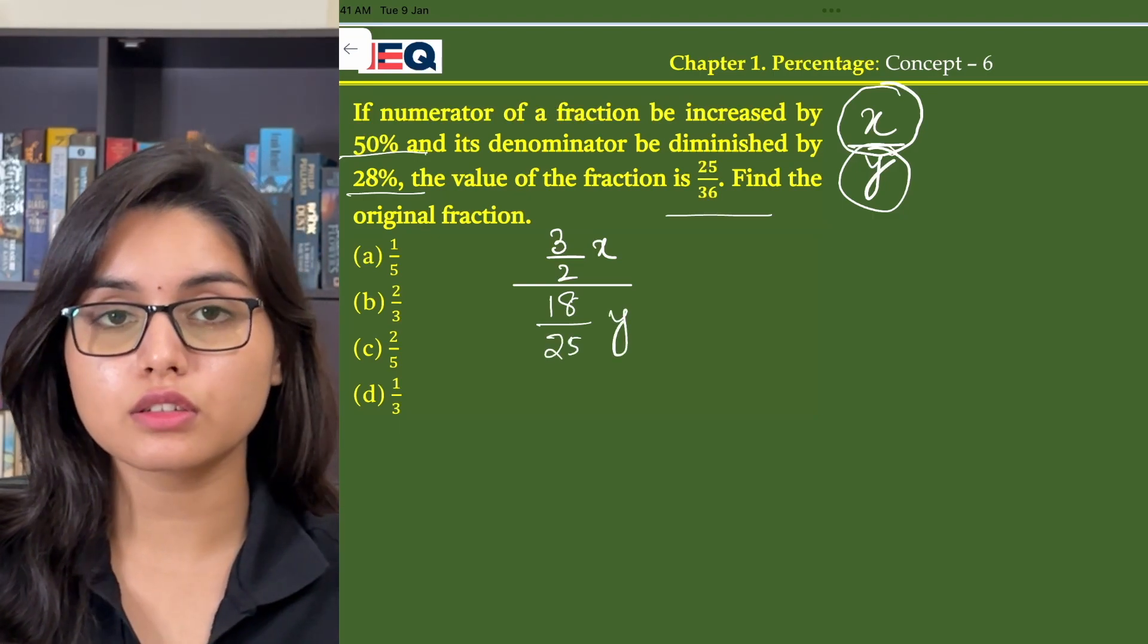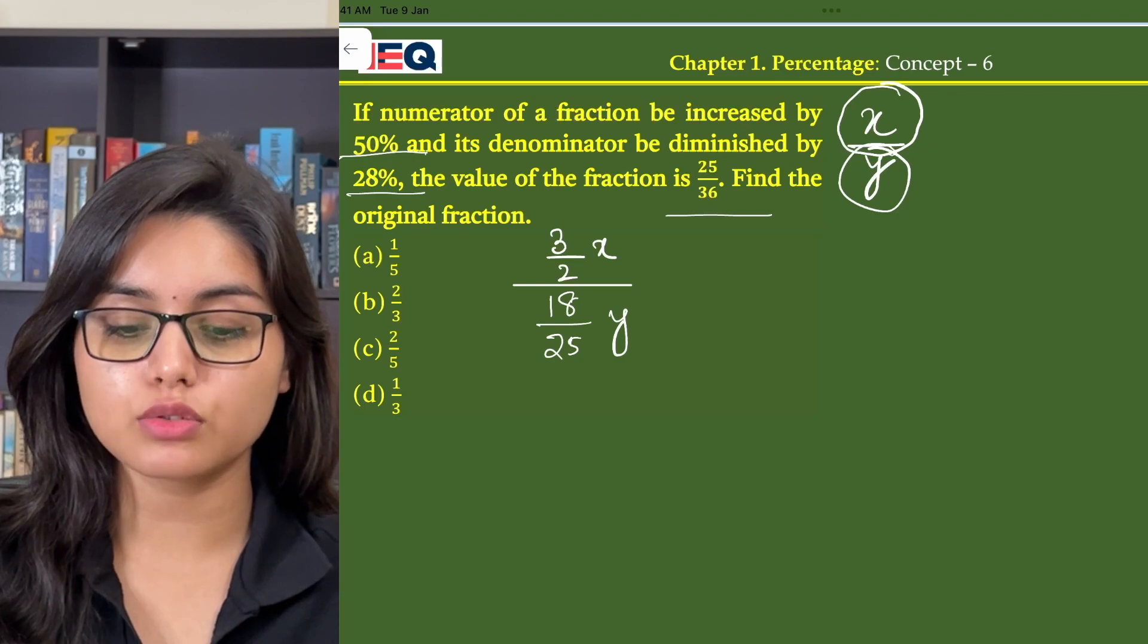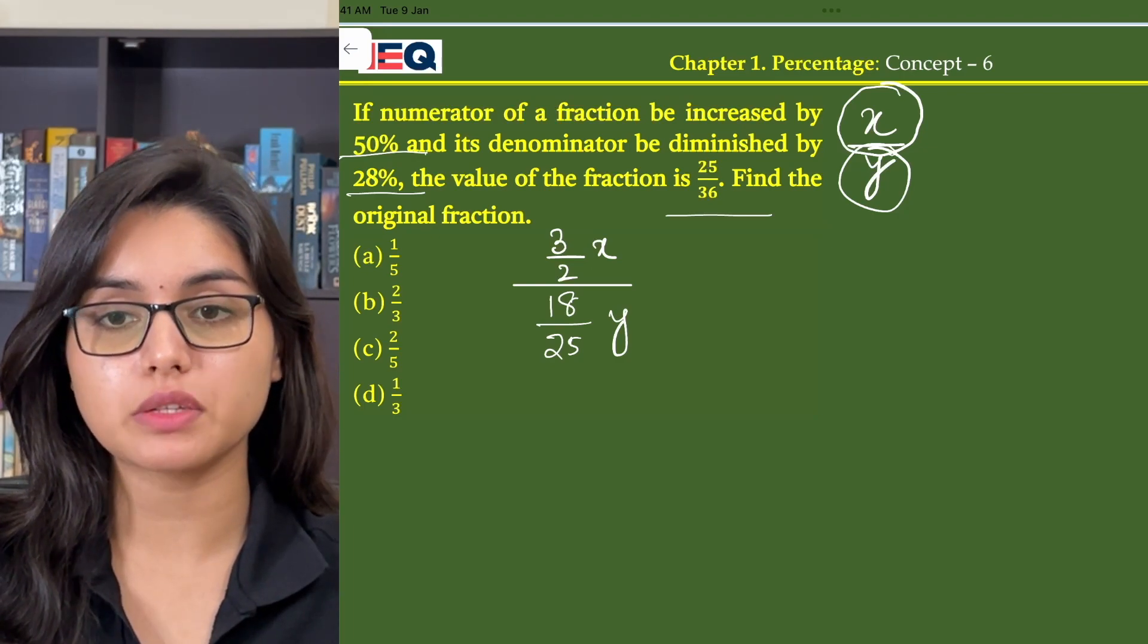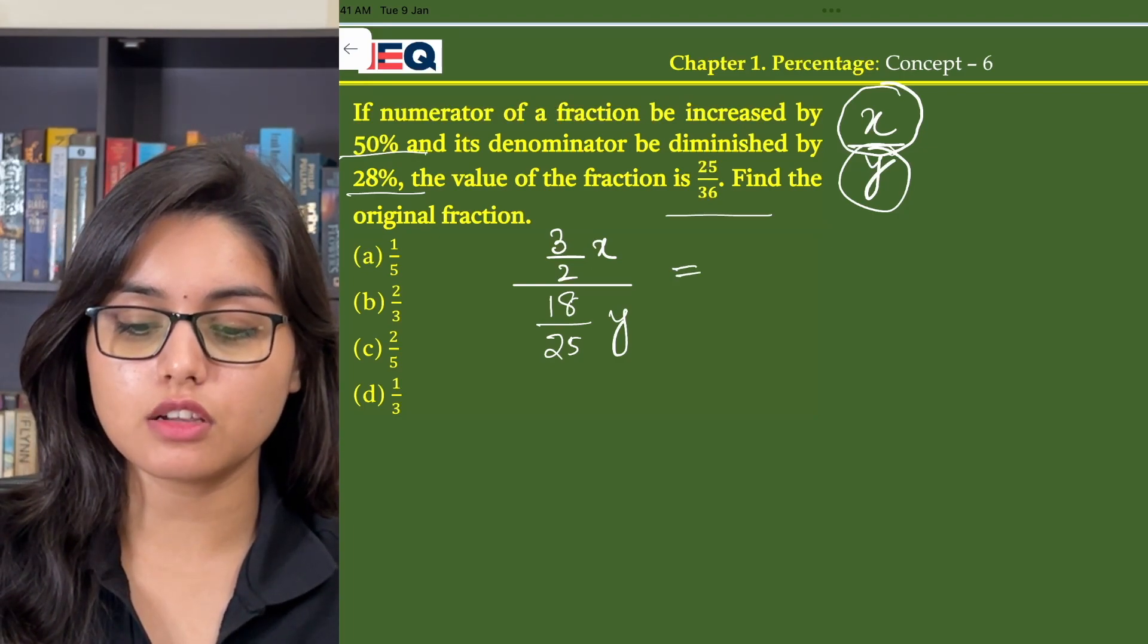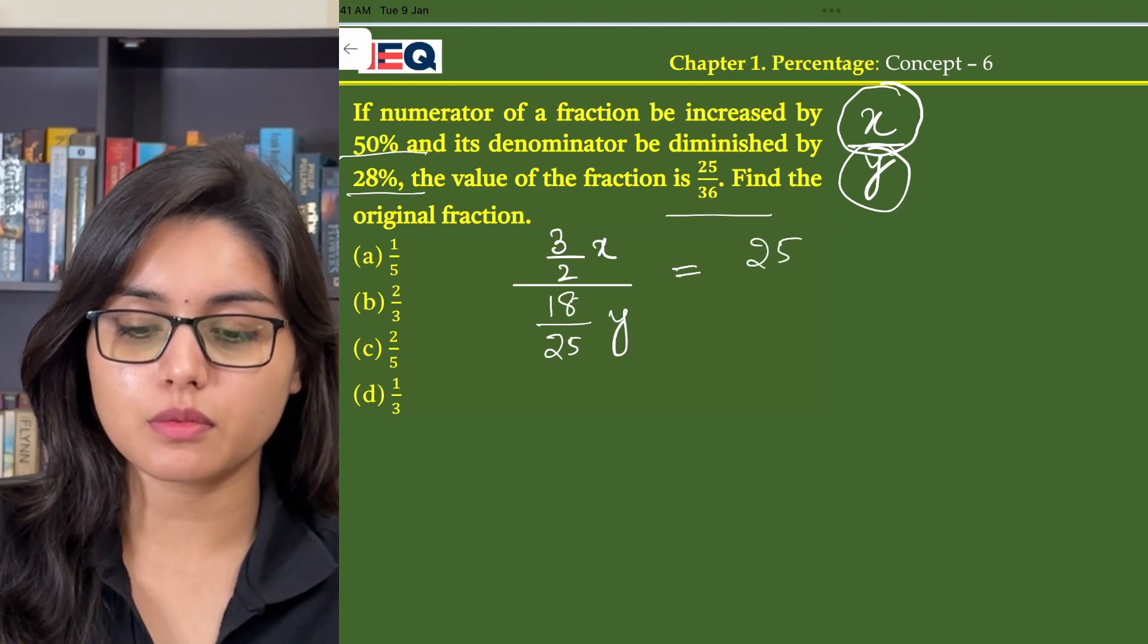Now, according to the question, 3 by 2x divided by 18 by 25y is equal to 25 by 36.